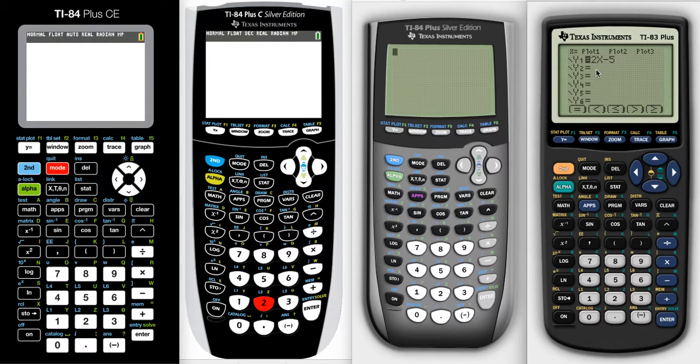This one, I've already got an equation in there, 2x minus 5. Let's say I want to change that to maybe a greater than. Then you're going to hit Alpha, and then the trace, because the trace is underneath the greater than. And what that does is it just changes that to a greater than symbol, and shows you then it would be a dotted line with shading on top there.